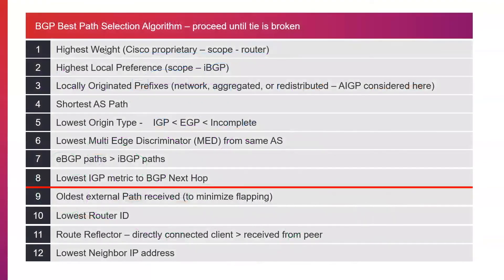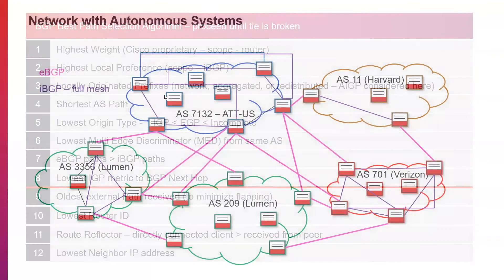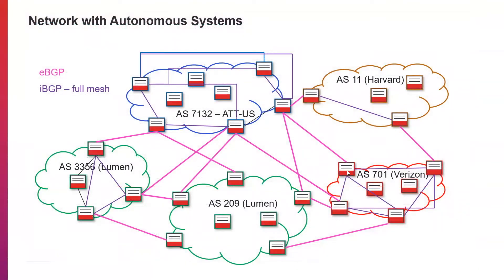If we didn't set highest weight, the next attribute we look at is the highest local preference, and the scope of this is the IGP. If we wanted to prefer Verizon routes over Lumen routes, the border router that learned routes from Verizon would advertise them to its peer routers with a higher local preference value. That way it's telling the other routers in the AS to send traffic through Verizon instead of Lumen.